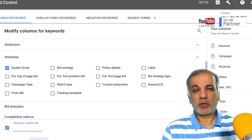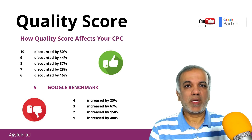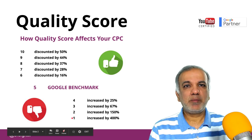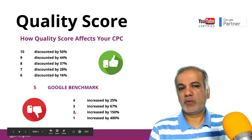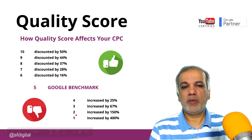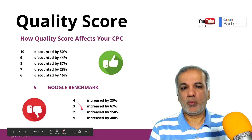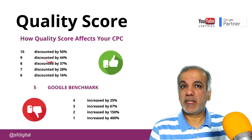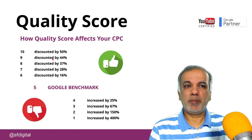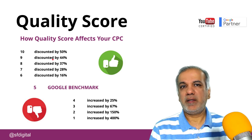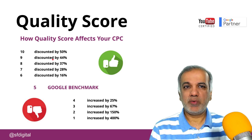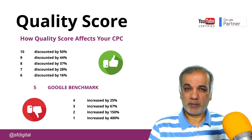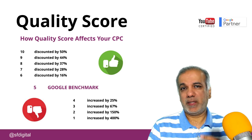So let's go back to our presentation. Let me explain a little bit more about the quality score. Each keyword has got a quality score between one and ten — one being the worst and ten being the best. You want to be as high as possible, but it doesn't happen straight away. It gradually improves and quality score is mainly dependent on three things.